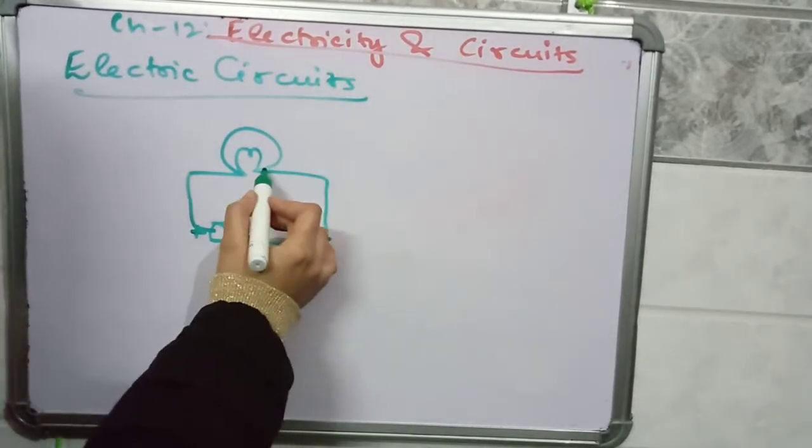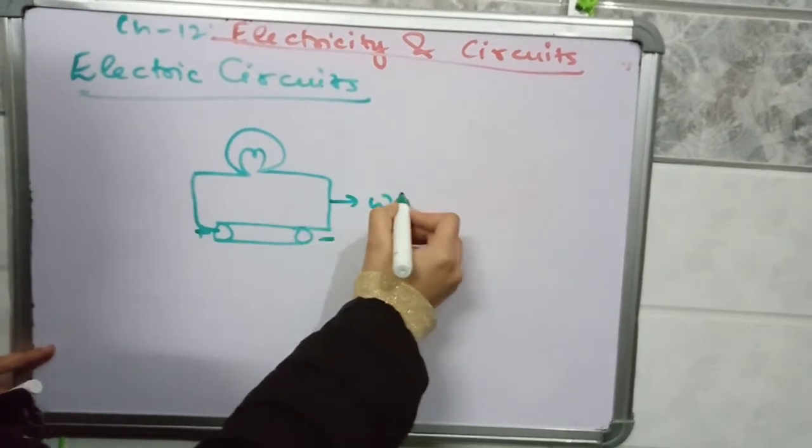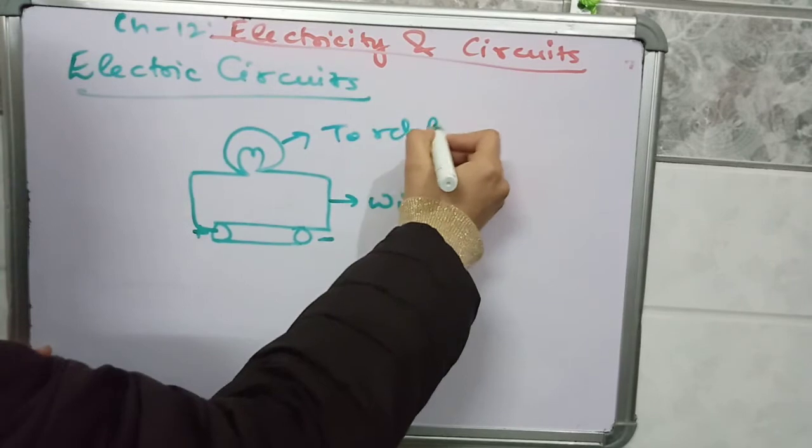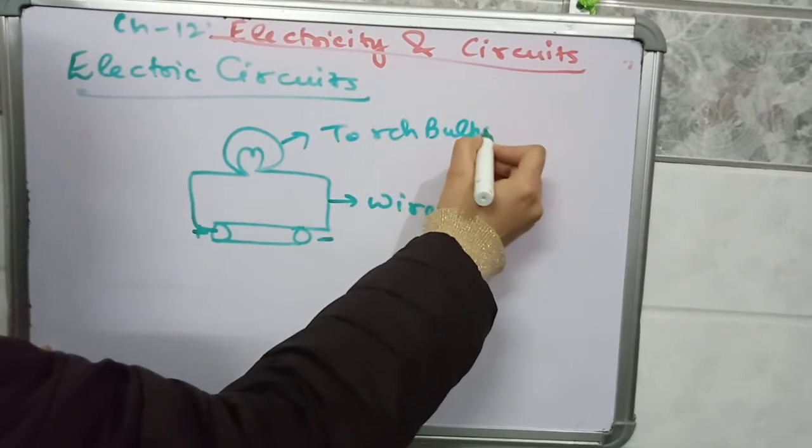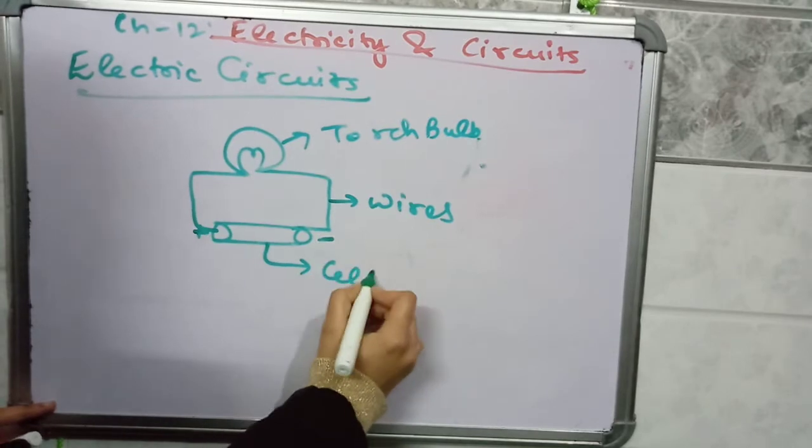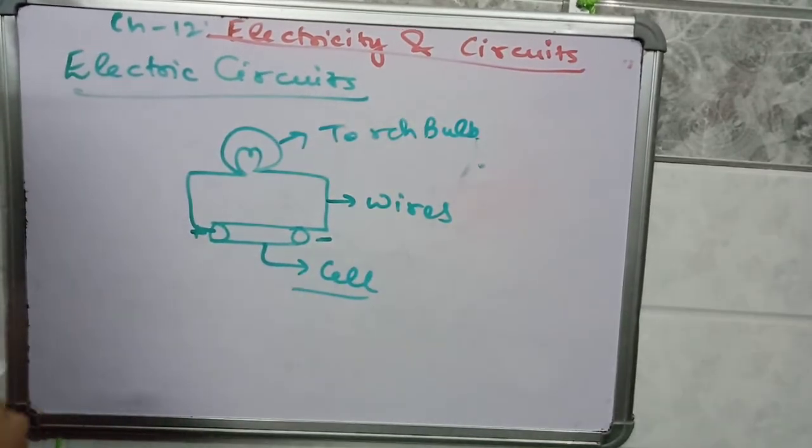These are the wires, and this is a torch bulb which is used in various toys also. And here is a dry cell which is used in remotes, TV remotes, or in watches or in clocks.